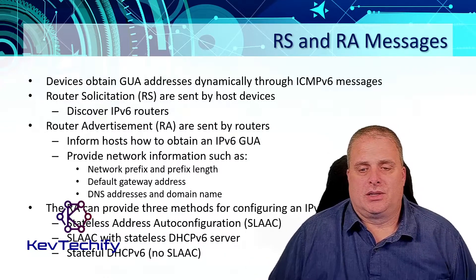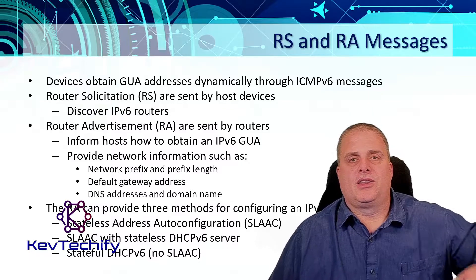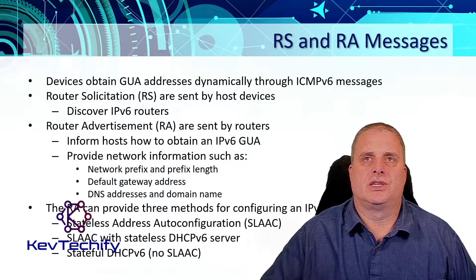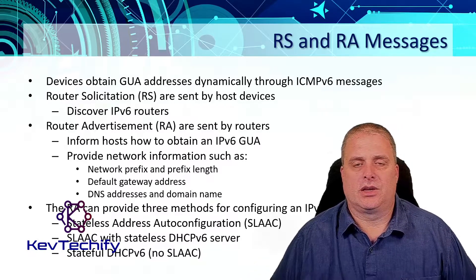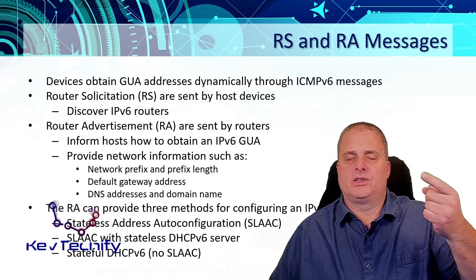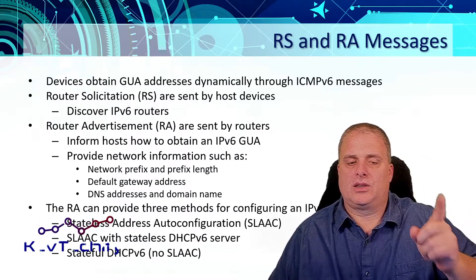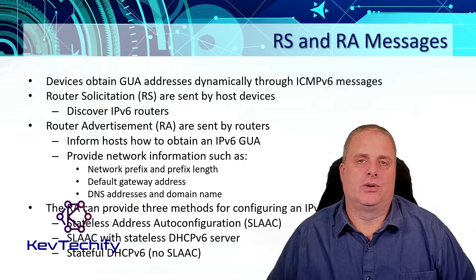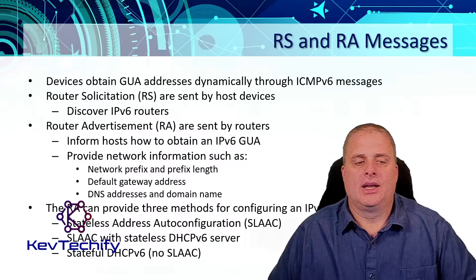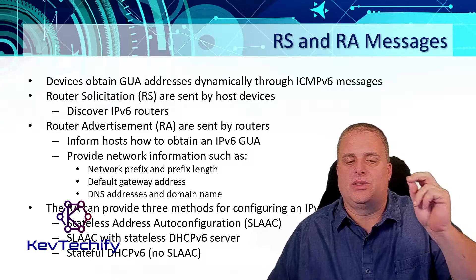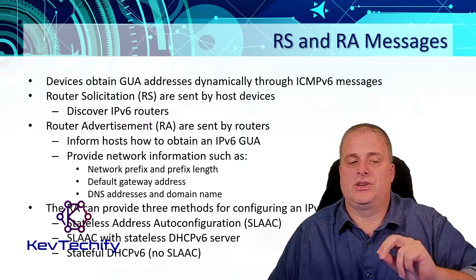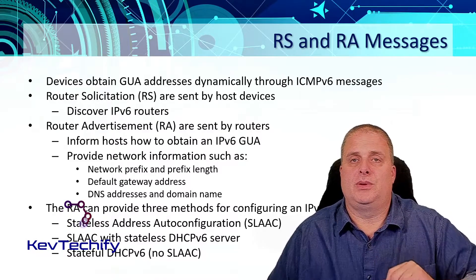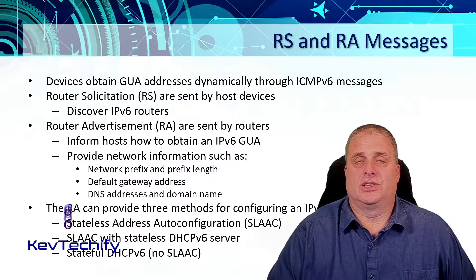Router advertisements provide three different methods for IPv6 global unicast addresses. The first is Stateless Address Auto Configuration, commonly known as SLAAC. The second method is SLAAC with a stateless DHCPv6 server. And the third method is a stateful DHCPv6 server.